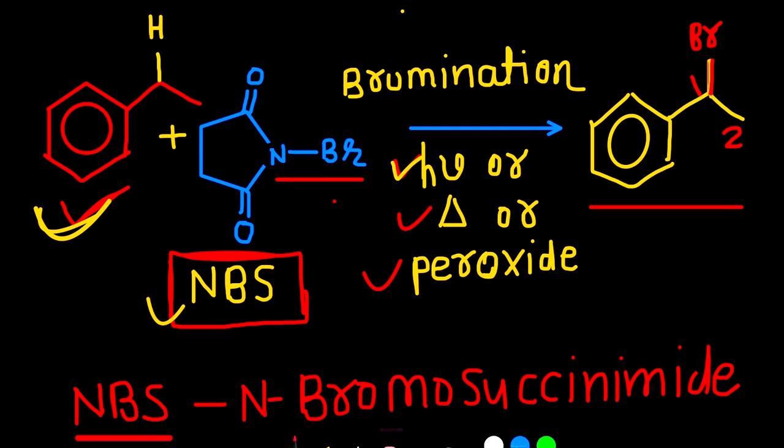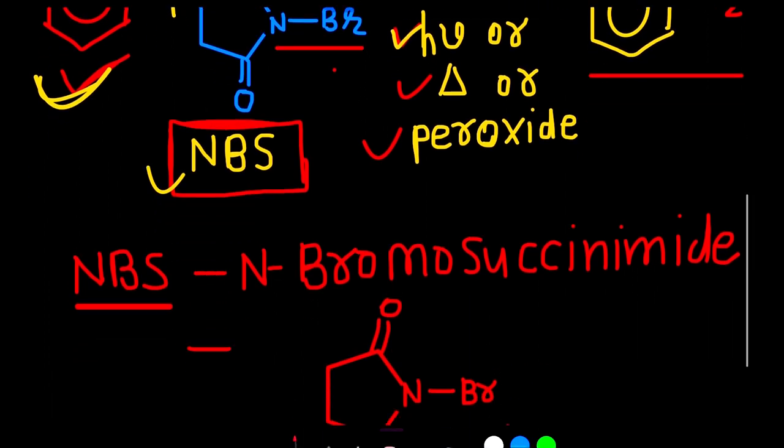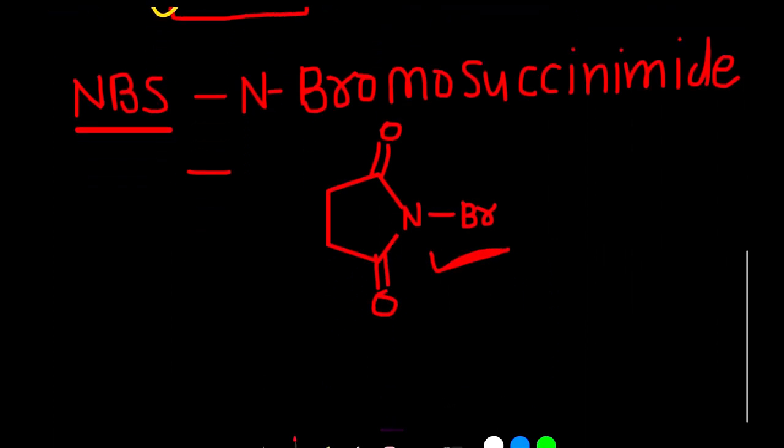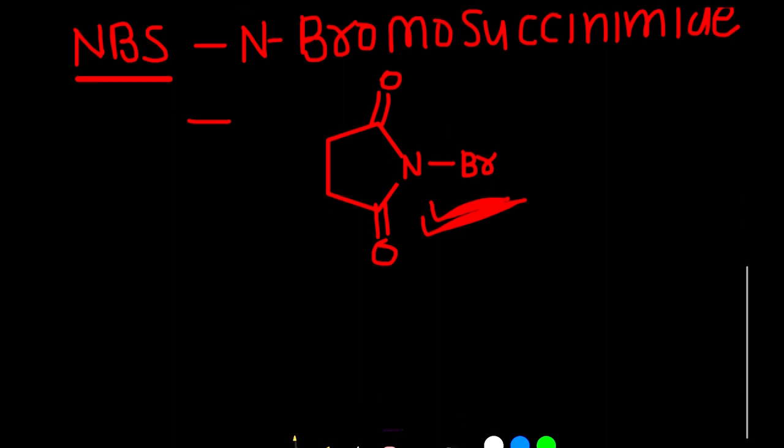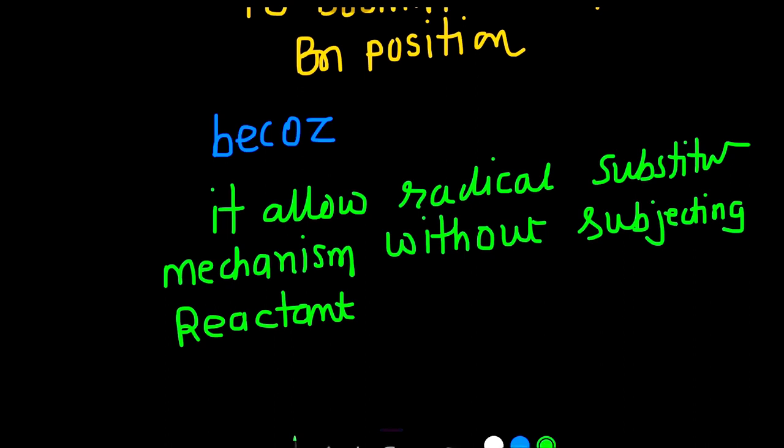How N-B-S work in this reaction? See, now N-B-S is called N-bromo-succinimide. N-B-S is frequently used to brominate allylic or benzylic position, because it allows radical substitution mechanism without subjecting reactant.